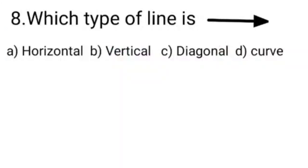Let's solve our question number 8. Which type of line is? For this question we have four options. Our option A is horizontal. Option B is vertical. Option C is diagonal and option D is curve.